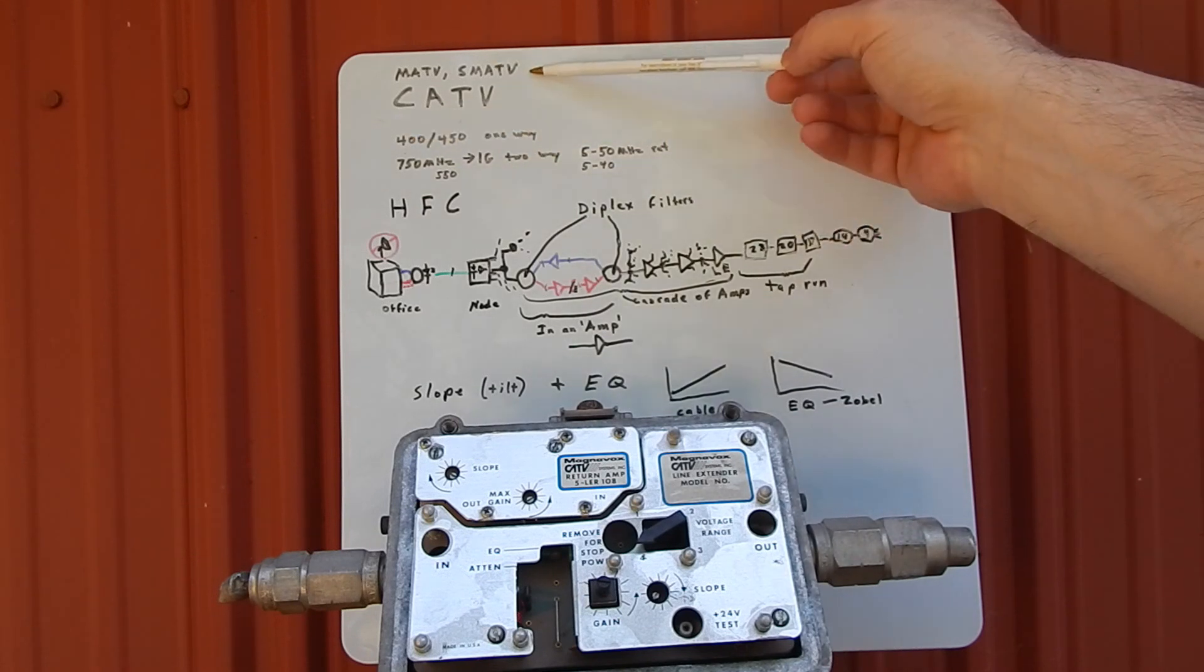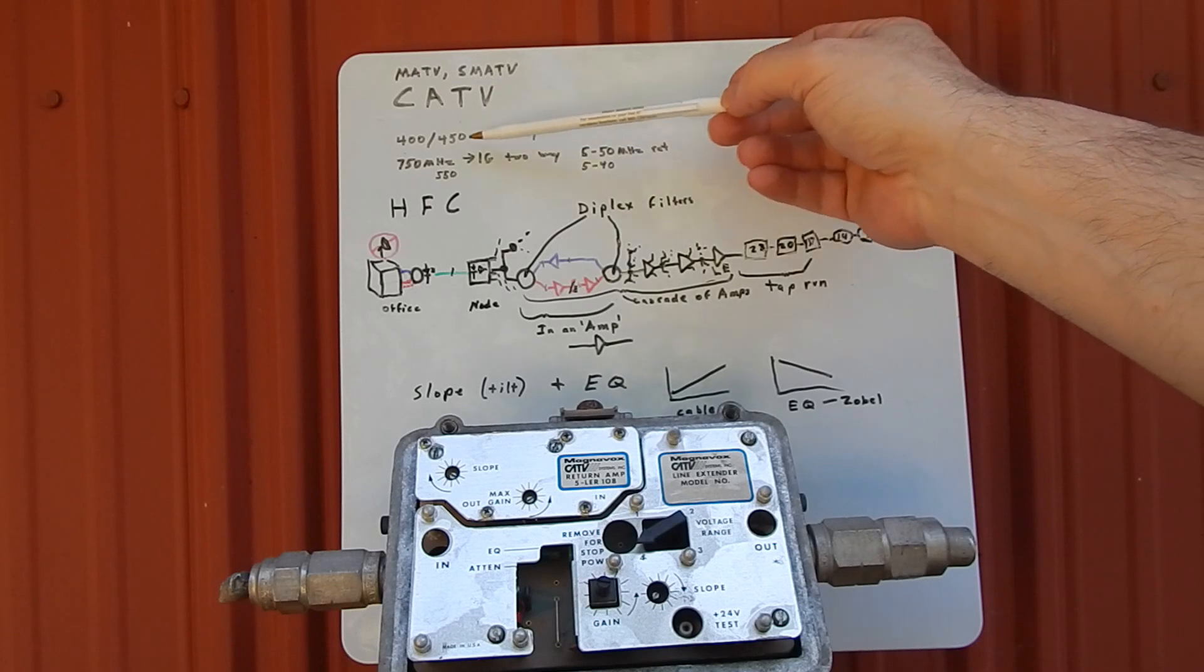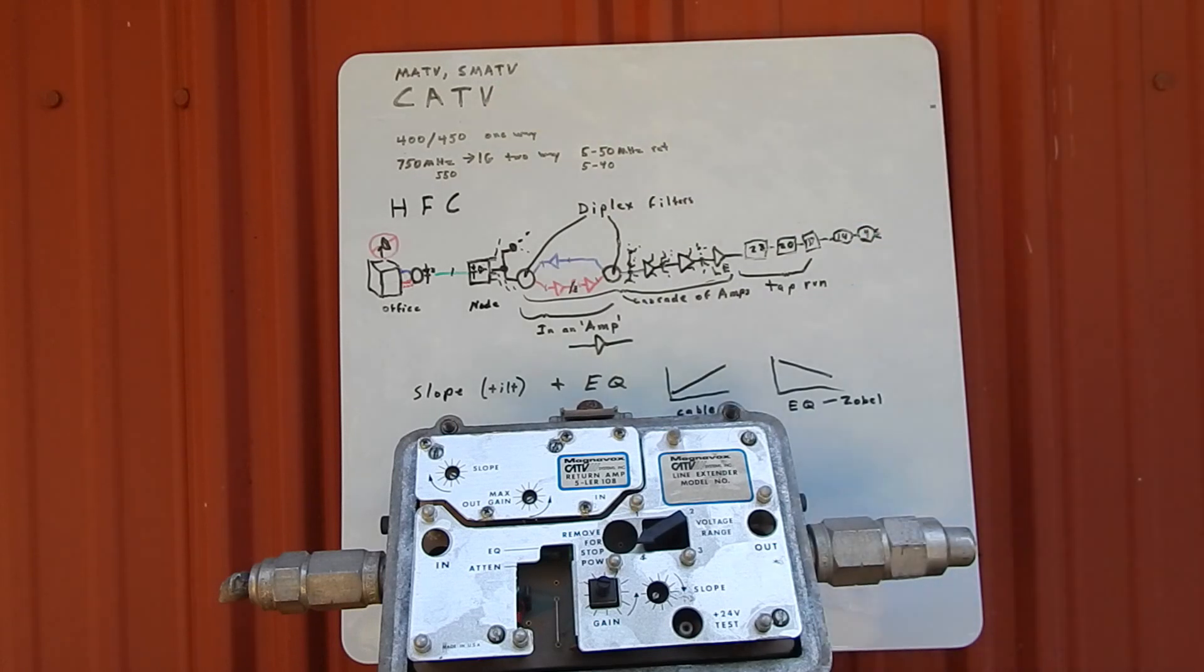They kept pushing the top bandwidth of the cable systems higher and higher. When I got into cable TV out of SMATV, after my company got sold, I went to one of the cable companies that bought the assets—a company called Continental Cable TV. Very fine company in many ways. Then I ended up with MediaOne, another company that doesn't exist anymore. MediaOne had a lot better technology than Continental.